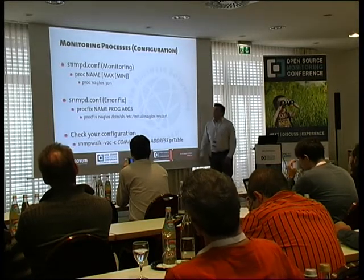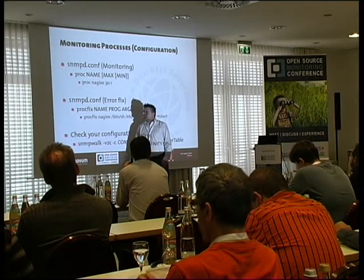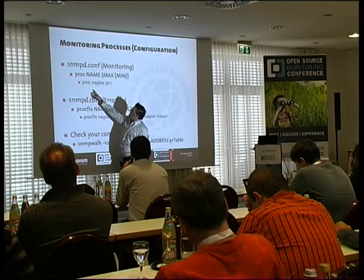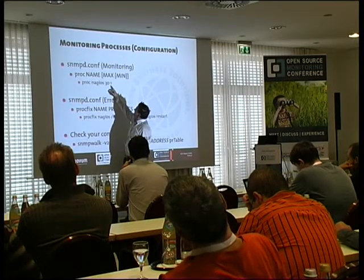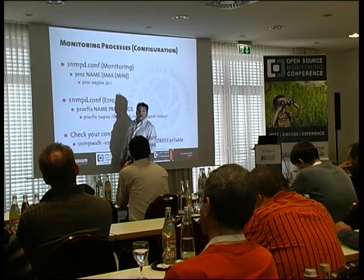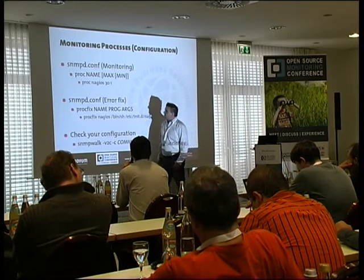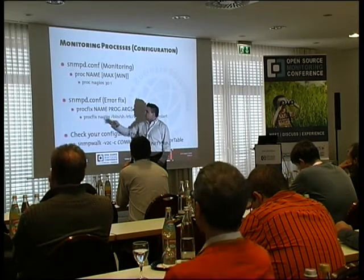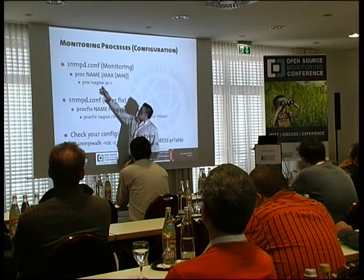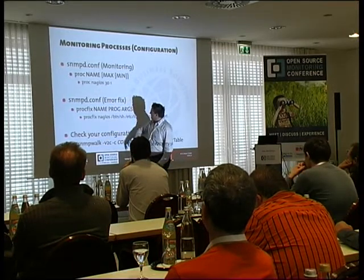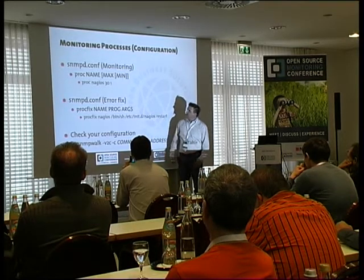Monitoring processes is also not a problem. You can give the process name from 'ps -ef', then say proc Nagios should only occur 30 times and there should be a minimum of one process of type Nagios. Another thing you can do is configure a proc fix — you give the name Nagios, so if there is a problem with proc Nagios, you can fix it by executing '/etc/init.d/nagios restart'.